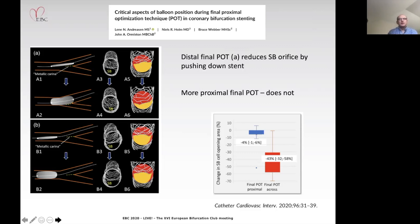Looking at a series of procedures in the graphic on the right-hand side, the distal POT position resulted in a 43% reduction in side branch area, compared to the more proximal position which preserved or slightly increased it by 4%.